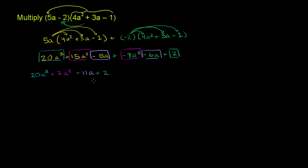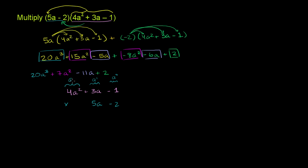Now I'll show another way to get this exact same answer, which is essentially doing the distributive property twice but more analogous to how we actually multiply numbers. We write 4a squared plus 3a minus 1 on top, then multiply by 5a minus 2 below it. The places here aren't powers of 10 but powers of a: the ones place is a to the 0th power, the tens place is a to the first power, and the hundreds place is a squared.